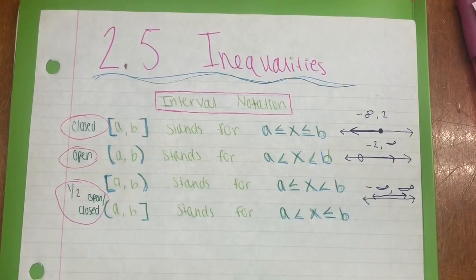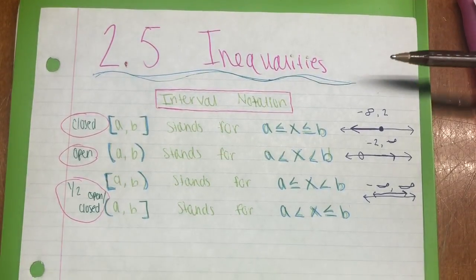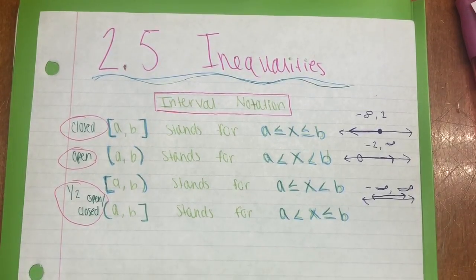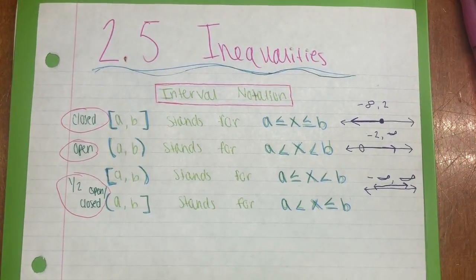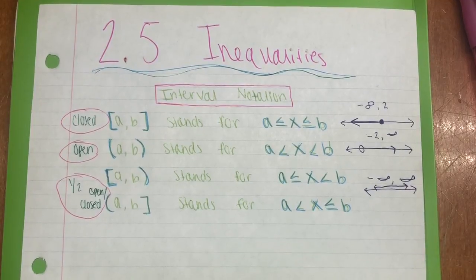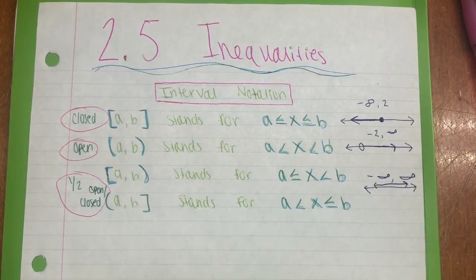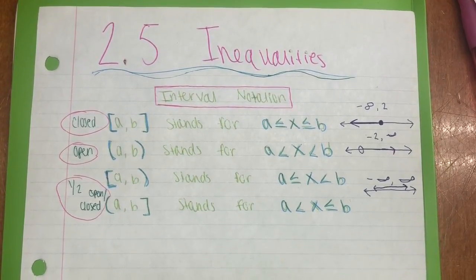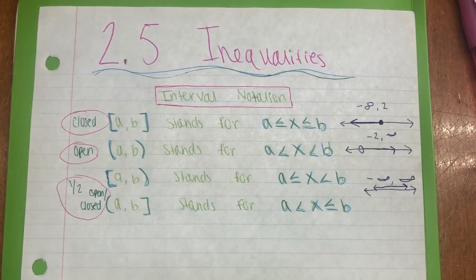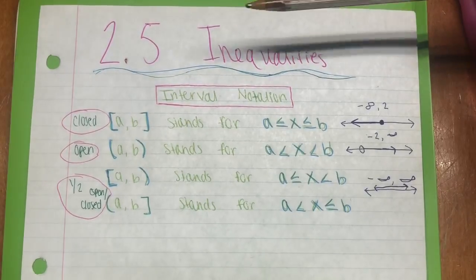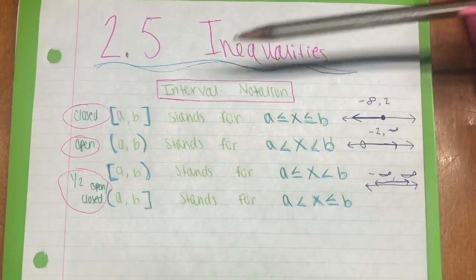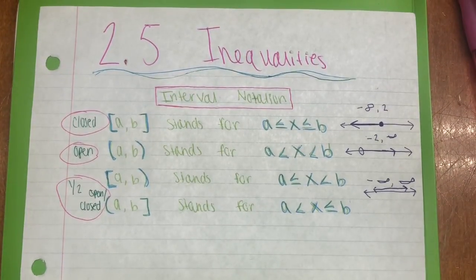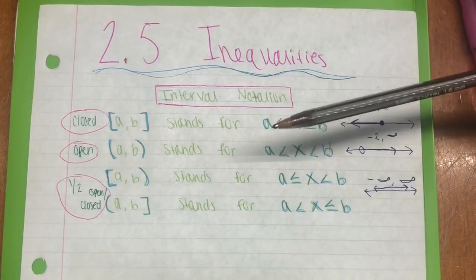For today's video we will be going over chapter 2 section 5, which is inequalities. Before we get into any examples or problems, we should go over what interval notation is — that is, if the interval is closed, open, or half open/half closed. There are four different types. To indicate closed there will be two brackets, to indicate open there will be two parentheses, and if it is half open or half closed there will be a bracket and a parenthesis.